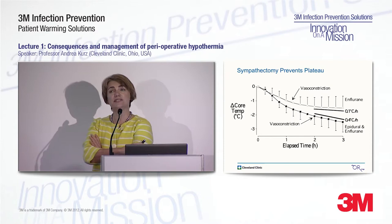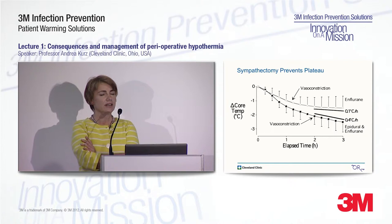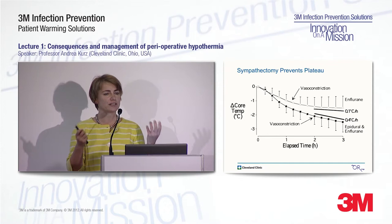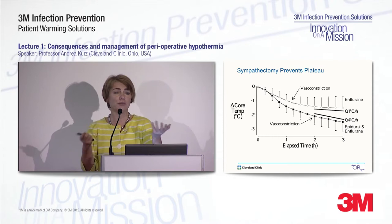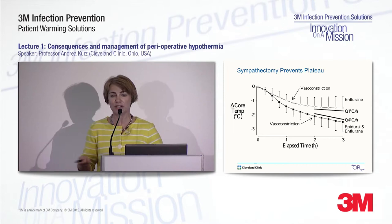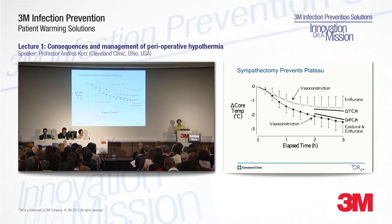Regional anesthesia is tricky because patients can't regulate behaviorally. When the core temperature drops, patients usually feel comfortably warm. We all know that when we induce a spinal anesthesia, the first thing we ask is: are your legs getting warm? So patients do not realize that they are hypothermic at that point in time.